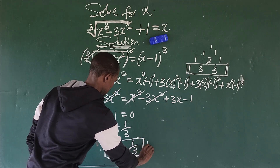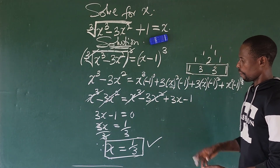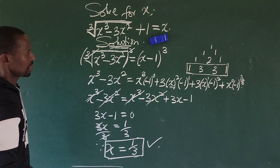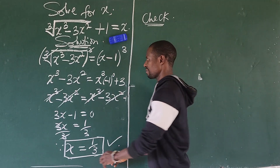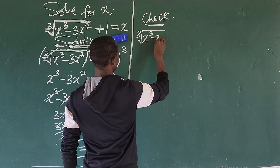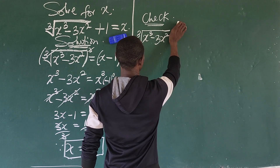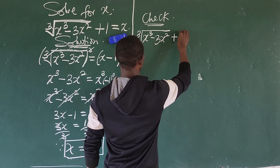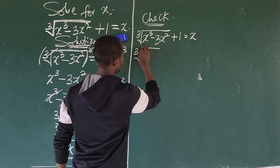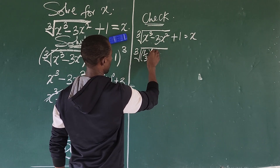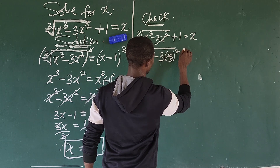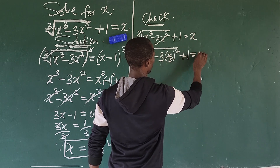This is the value of x that should satisfy the radical equation, but we want to verify it. Let's substitute x equals 1 over 3 back into the original equation: the cube root of (1/3) cubed minus 3 times (1/3) squared, plus 1, should equal 1 over 3.